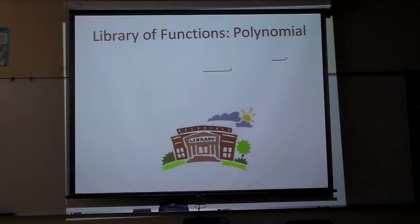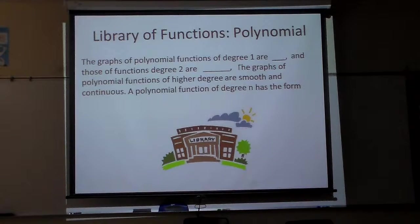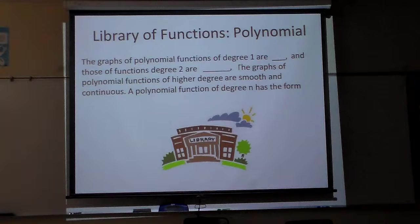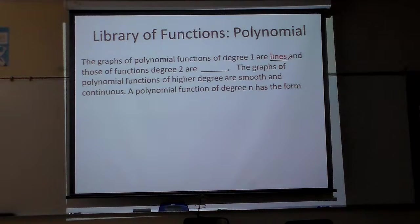Now then, here we go. Our library of functions about our polynomials. The graphs of polynomial functions of degree one—so in other words, a degree, remember, is the exponent, the highest exponent on the x. So if there's not a number there, it's always one. Those are lines.